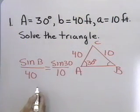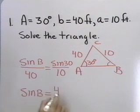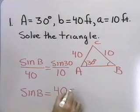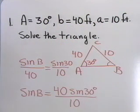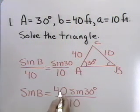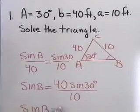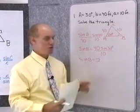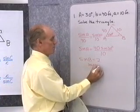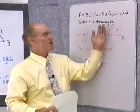Using the Law of Sines, I can solve for sine B. This is the first time we've solved for an angle using the Law of Sines. Multiplying both sides by 40, I get 40 times sine 30 degrees, divided by 10. Sine 30 is one-half, times 40 is 20, divided by 10 is 2. So sine B equals 2. But the sine of any angle is always between negative 1 and positive 1 — it can't possibly be 2. So this is impossible, meaning there is no triangle that fits this description.